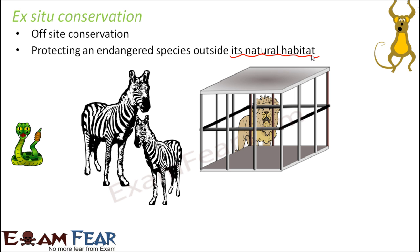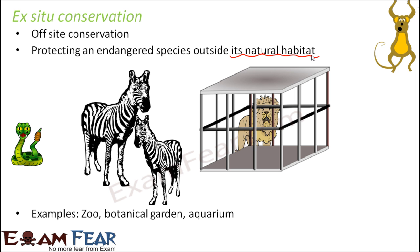In a zoo, animals like tigers and lions are kept inside cages. They stay inside the cage, but they are provided timely food and everything needed for their survival. The zoo is not their natural habitat — an environment is created that looks similar to their natural habitat, and the organisms are kept there. Zoo is a good example of ex situ conservation.